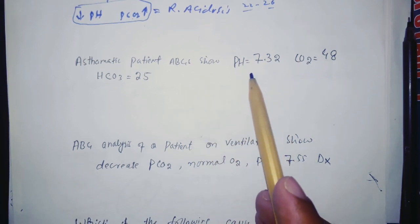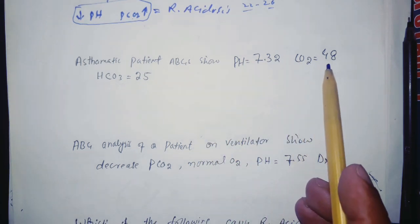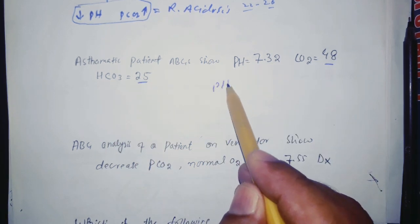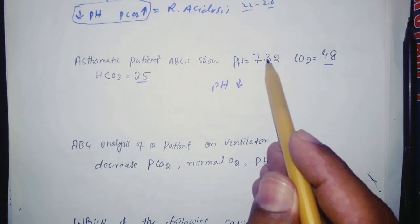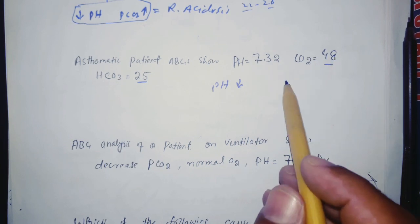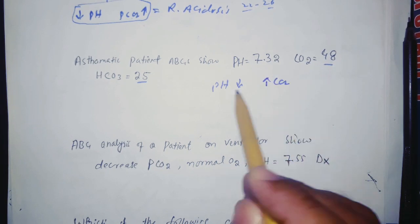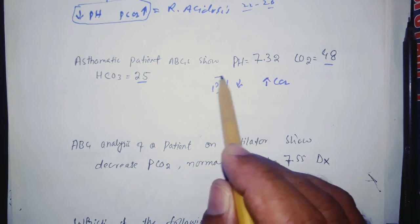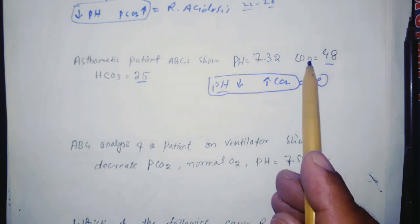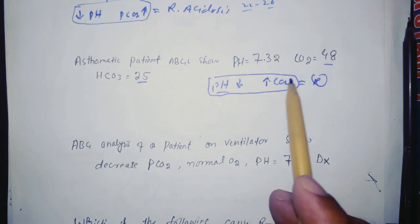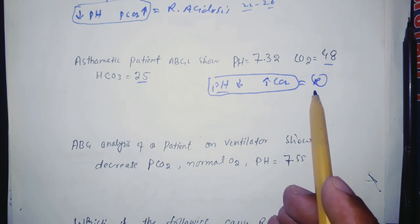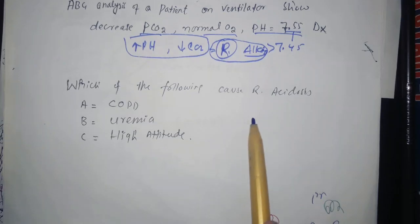An asthmatic patient's ABG shows pH 7.32, CO2 48, HCO3 25. The pH is decreased (below 7.35), CO2 is above 45, and HCO3 is normal. pH and CO2 go in opposite directions, indicating a respiratory problem. Since CO2 is rising and pH is falling, this is respiratory acidosis.